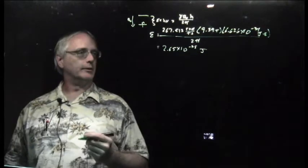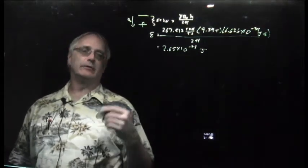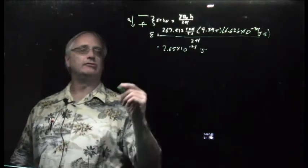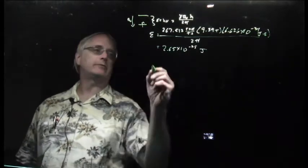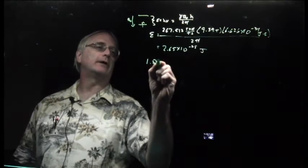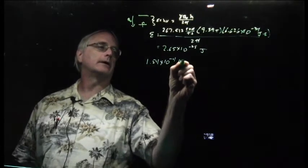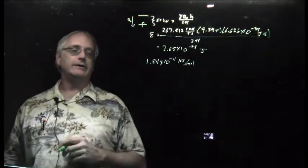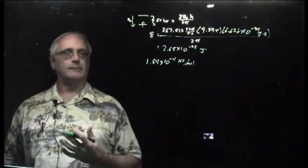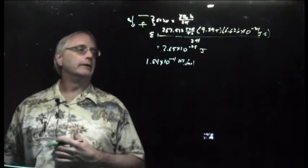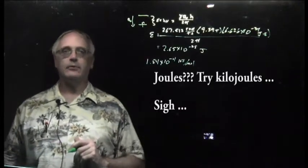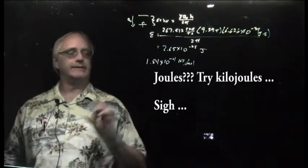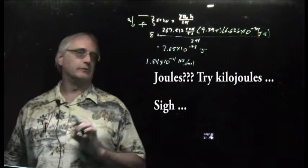And I get 2.65 times 10 to the negative 25th joules, which is an extraordinarily small number. And if I take that number and multiply by Avogadro's number and then convert to kilojoules per mole, which is a more common chemistry unit, that is 1.54 times 10 to the negative 4th kilojoules per mole. Remember, the energy you need to break a chemical bond is on the order of a couple of hundred, three to four hundred joules. This is far, far, far weaker than that. NMR doesn't come anywhere close to breaking any chemical bonds. It's a very low energy form of spectroscopy.